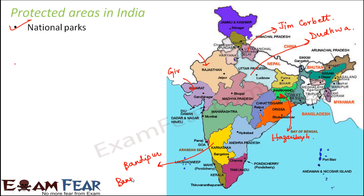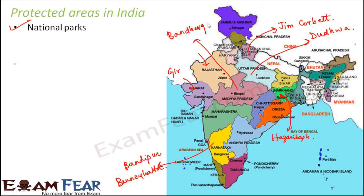You also have Bannerghatta National Park. In Madhya Pradesh you have Bandhavgarh National Park. These are just a few of them — in different states there are many different national parks, which are extremely protected areas for conservation of plant and animal species.